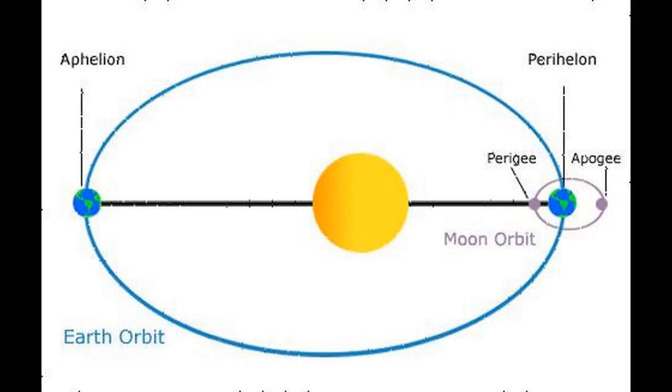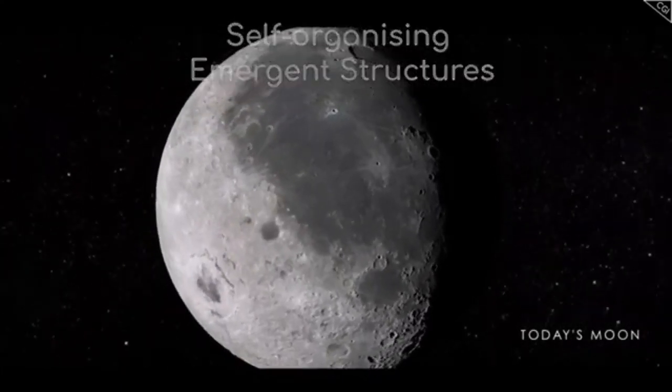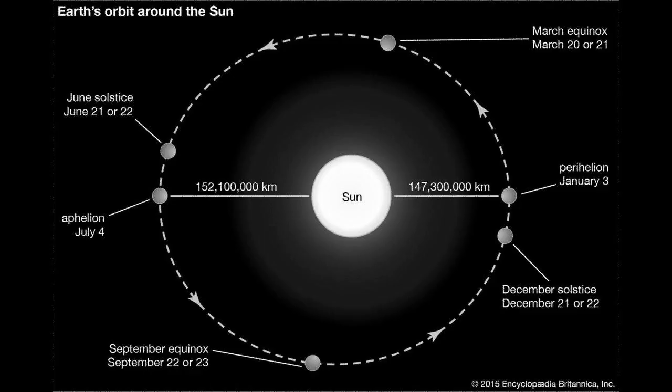Examples of elliptic orbits include Hohmann transfer orbit, Malnia orbit, and Tundra orbit.